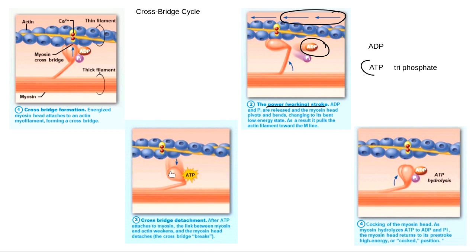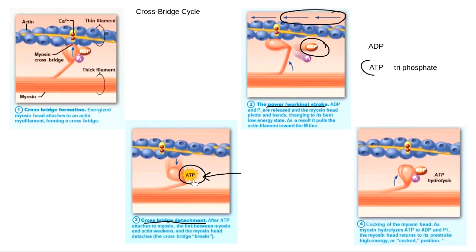At that point, a new molecule of ATP comes and attaches to myosin. When ATP attaches to myosin, it causes myosin to detach from actin — myosin would rather hold ATP than hold actin. This stage is called cross-bridge detachment. Myosin and actin let go of each other because myosin has now found ATP, a high-energy molecule.